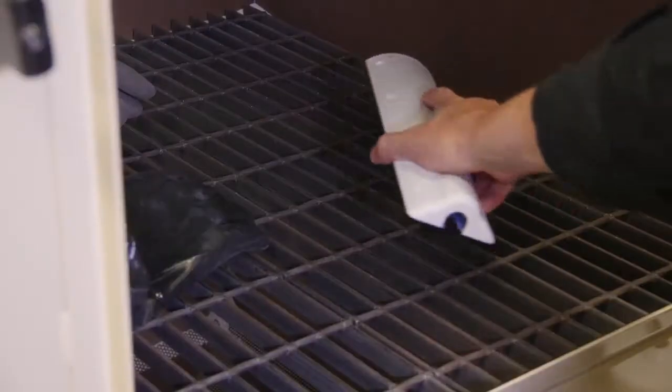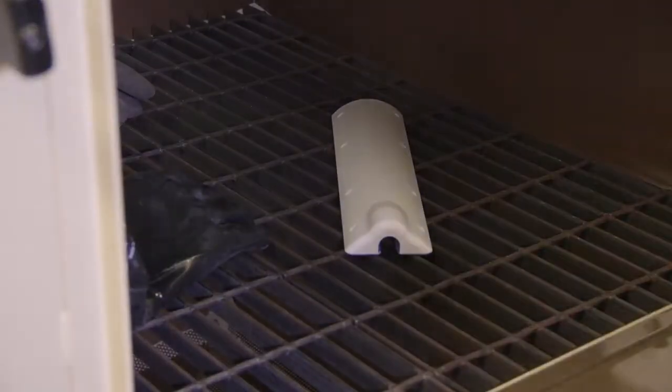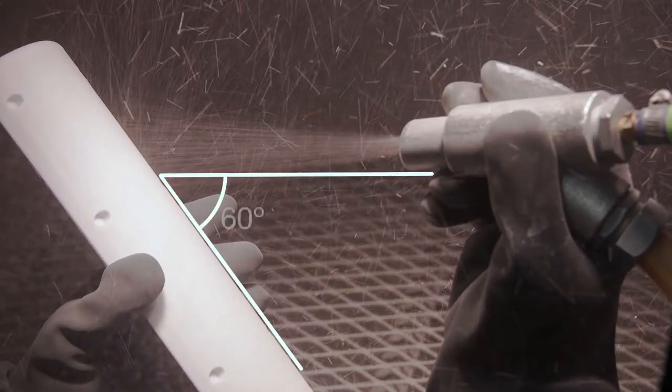Now media blast the part. Place the part in the blasting chamber. Position the spray gun at a 60 degree angle to the part surface.